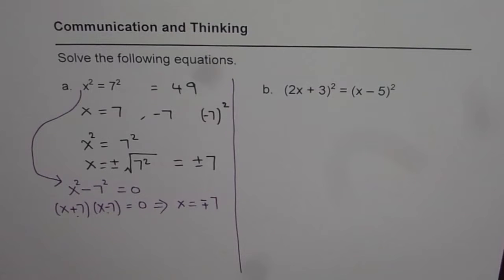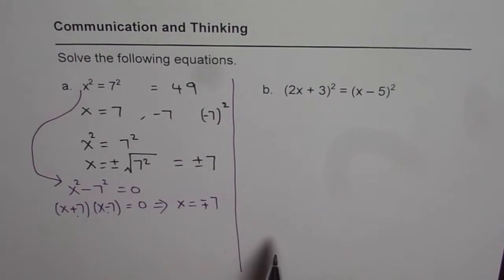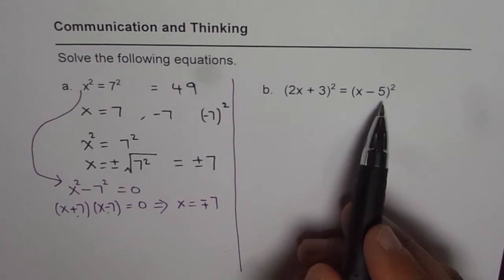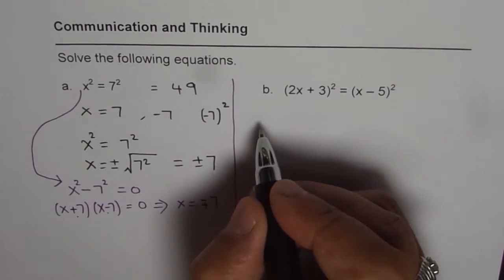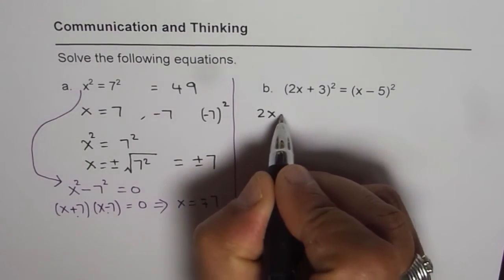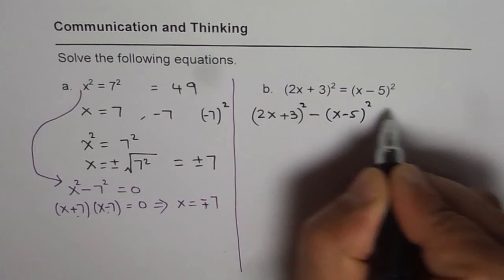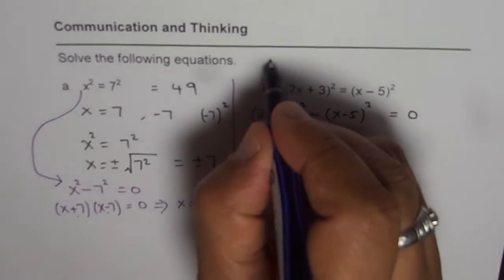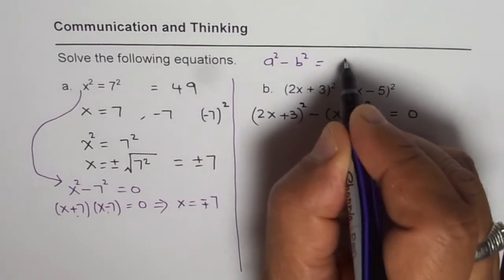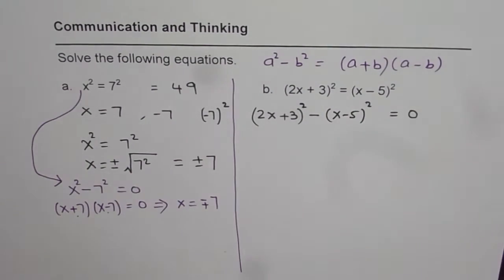Now let us solve our question which is 2x plus 3 whole squared equals to x minus 5 whole squared. Now should we square root both sides? No we should not. We have seen that gives us a problem. Right? So the best way is bringing terms together on one side. So that gives you 2x plus 3 whole squared minus x minus 5 whole squared equals to 0. And now we can factor this. Since we know a squared minus b squared is equal to a plus b times a minus b. Right? So we will factor this.